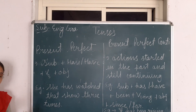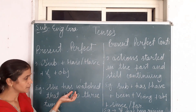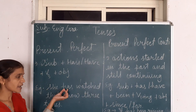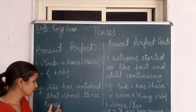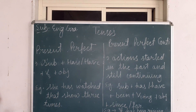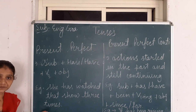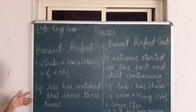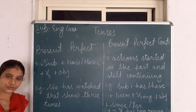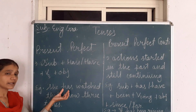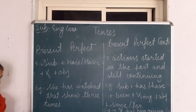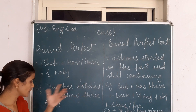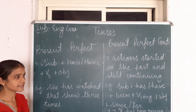Suppose we want to make a negative sentence: 'She has not watched that show three times.' Suppose we want to make an interrogative sentence, then 'Has' will be written at the start. If we want to make a WH question, then before the helping verb we will write a WH word, then helping verb, then subject, then the third form of the verb, then the remaining part of the sentence.